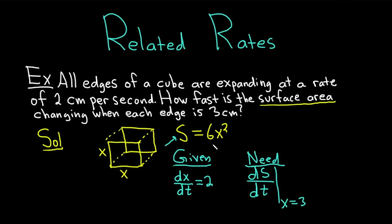Now that we have our formula, we have what's given, we have what we need, we can go through and finish up the problem. So we're just going to compute the derivative. So dS/dt, and we're looking at the formula here, S equals 6x².